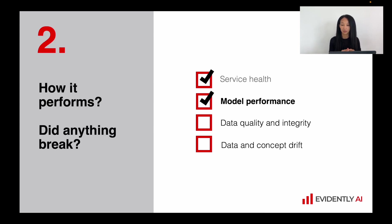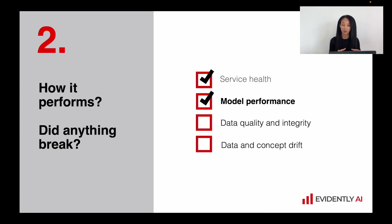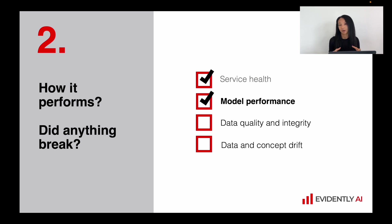Together with service health, we need to check how good our models are. The most straightforward set of metrics are model performance metrics. The particular set depends heavily on the problem statement. For ranking algorithms — such as search engine optimization or content recommender systems — you need ranking metrics. For regression problems, you need metrics like mean absolute error or mean absolute percentage error.